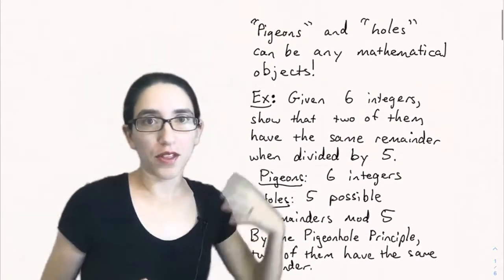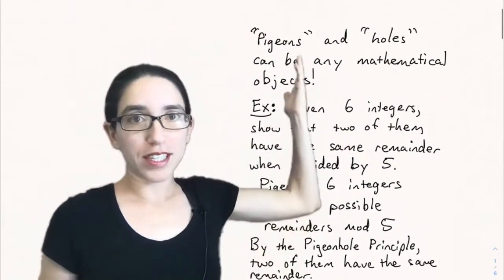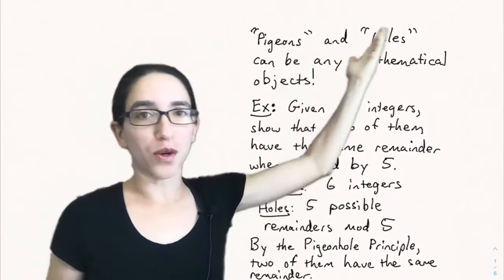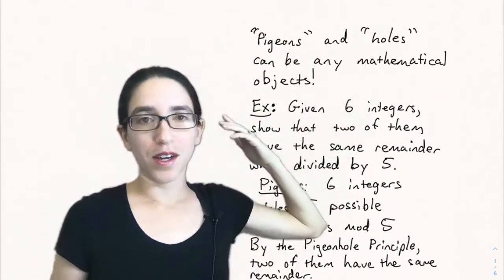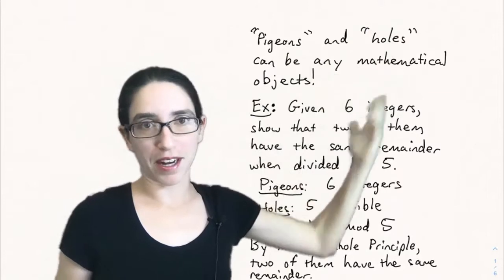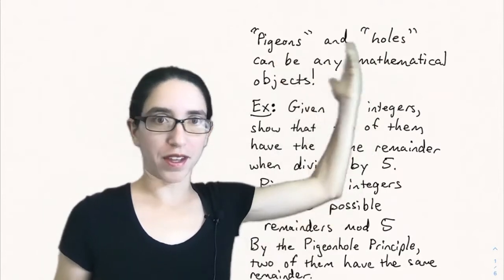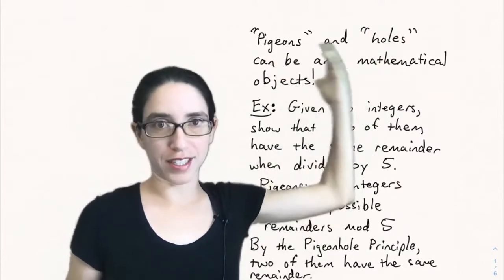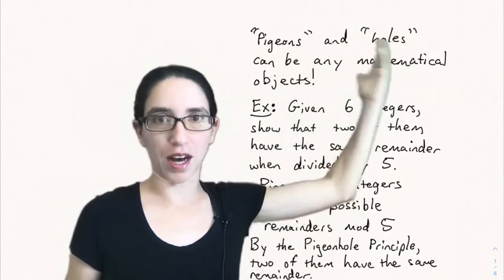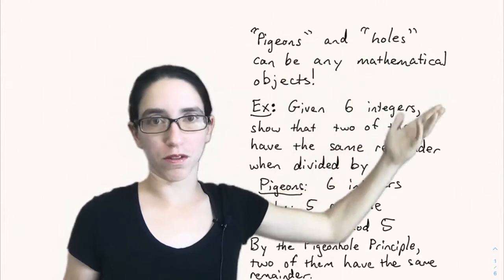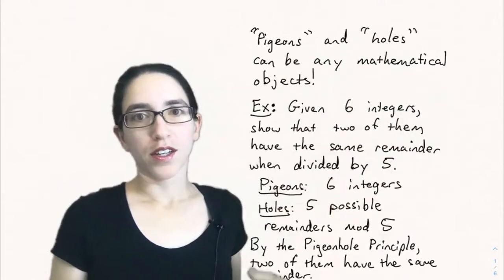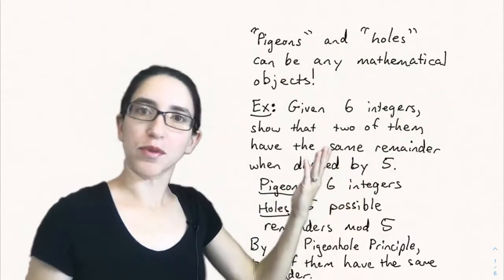Now I want to point out that of course it doesn't have to be pigeons and holes. This can work for any mathematical objects. If you have more of something than another and you're trying to assign it somehow, then you have some overlap. So let's look at an example.